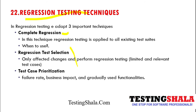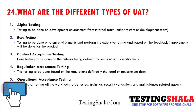The second technique is regression test selection, where testing is done only on the impacted areas — only the identified test cases covering those impacted areas are run. The third technique is test case prioritization, where test cases are prioritized based on test value rate, business impact, and which functionalities are impacted most often. These are the three important regression testing techniques.